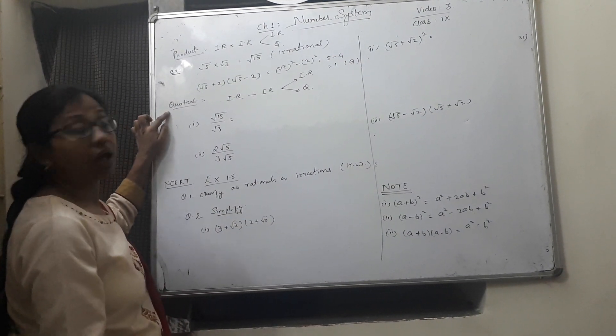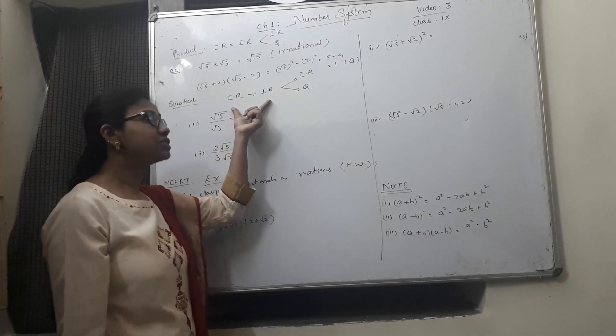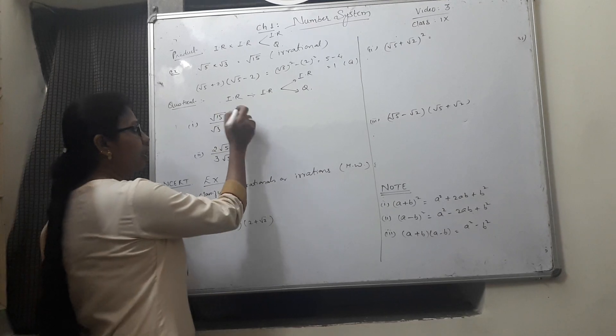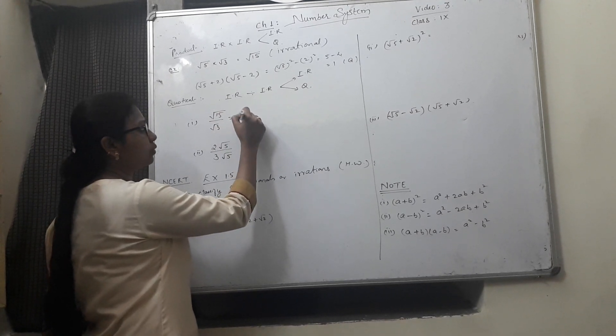Now comes to the quotient. Quotient of 2 irrational numbers can be irrational or rational. For an example, root 15 by root 3.